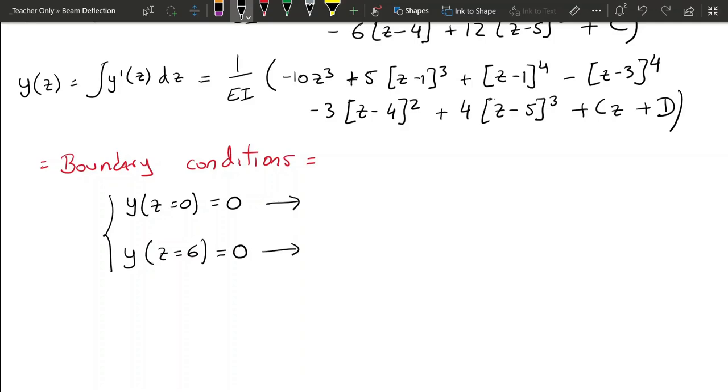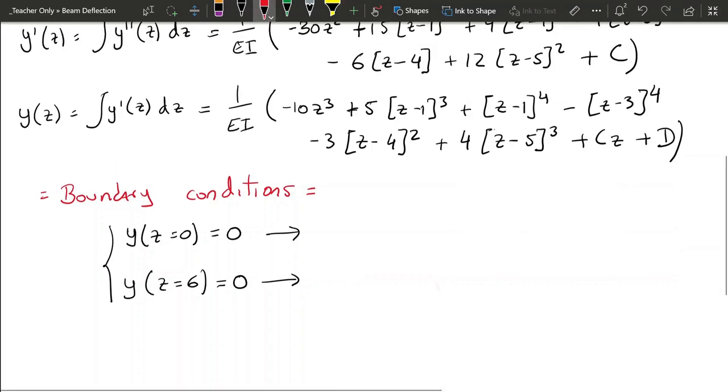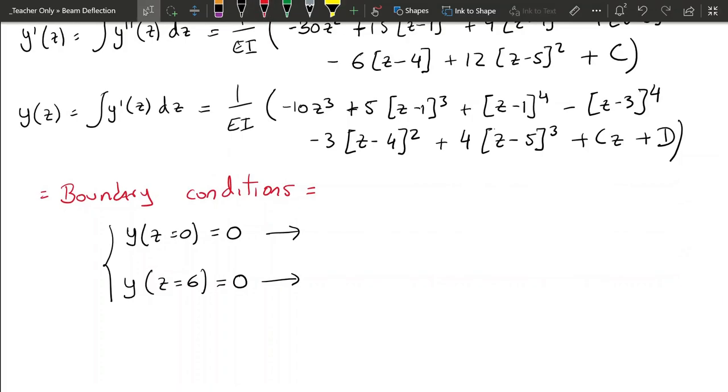So we can solve these two equations. So if we take, when z equals 0, if we take the displacement, we will see that all of these terms will go to 0 except D. So we get D divided by EI is going to be equal to 0, and we can conclude that D is 0.